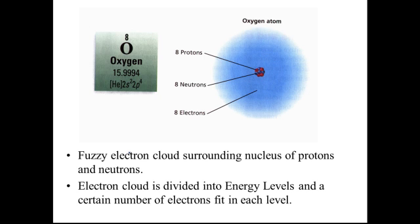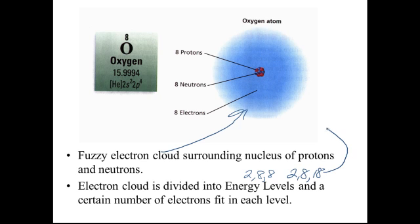The electron cloud is actually divided into energy levels — we're going to spend a couple of weeks on this. We're going to put a certain number of electrons into each level. You might have learned the 2-8-8 arrangement, or even 2-8-18. We'll talk about what that all means, but it all comes down to the energy level and the breakdown of the location of the electrons.